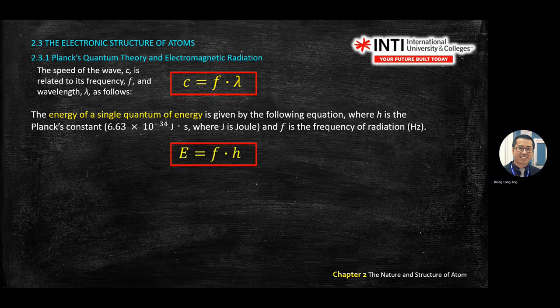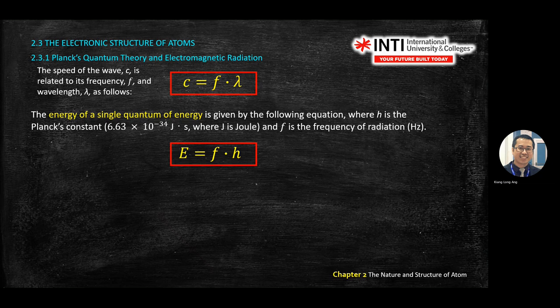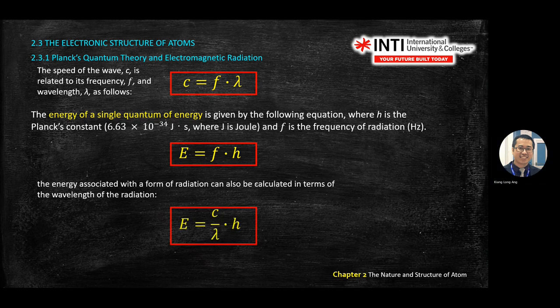The second equation: energy of a single quantum. Energy E equals frequency times the constant h, where h is called Planck's constant. Planck's constant h also won't be given - you need to memorize it: h = 6.63 × 10⁻³⁴ joule-seconds.